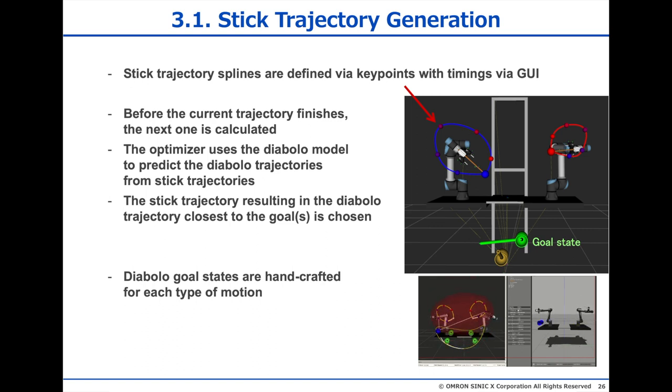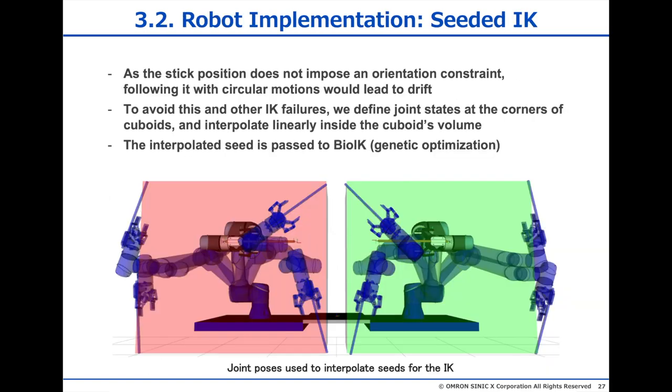One problem with these stick trajectory splines is that they only impose a position constraint on the tip of the stick, so the IK problem is under-constrained. If you run cyclic motions, the configuration of the robot can drift, and the robot can lock up. To avoid this problem, we seed our IK solver not from the current joint state, but from an interpolated state based on the stick tip goal. To obtain those states, we record joint states for each corner of these cube volumes, and then we do a linear interpolation inside them. This way the IK arrives at the same solution every time, or almost.